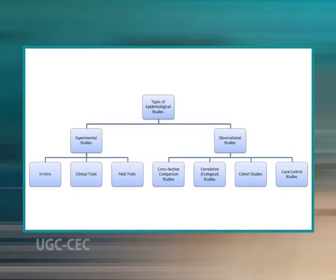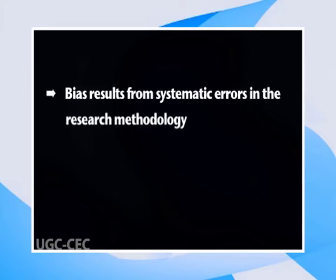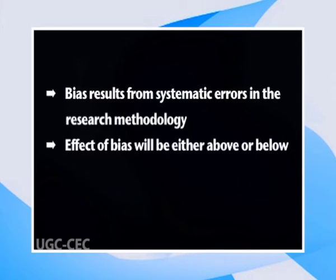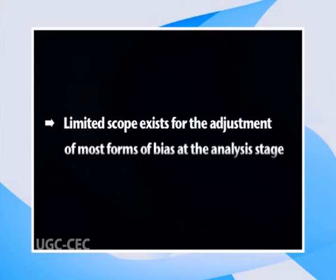Bias and confounding need to be considered at both the design and analysis stage of an epidemiological study so that their effects can be minimized. Bias may be defined as any systematic error in an epidemiological study that results in an incorrect estimate of the true effect of an exposure on the outcome of interest. Bias results from systematic errors in the research methodology. The effect of bias will be either above or below the true value depending on the type of systematic error. Limited scope exists for the adjustment of most forms of bias at the analysis stage.